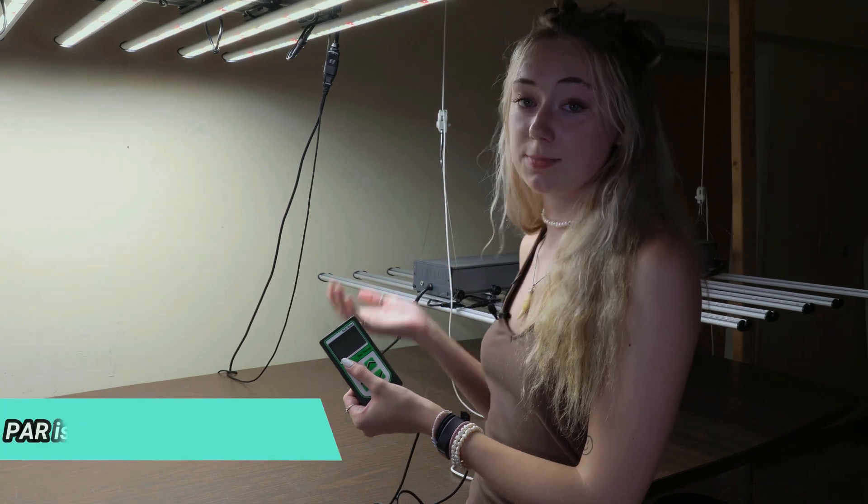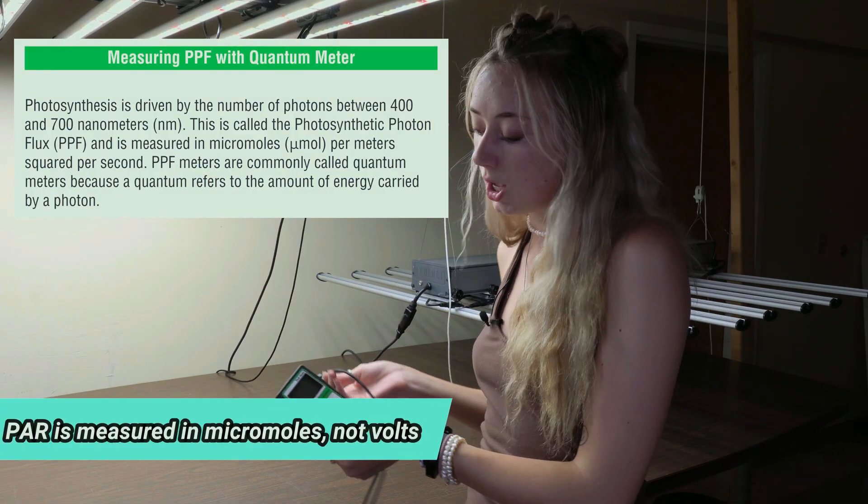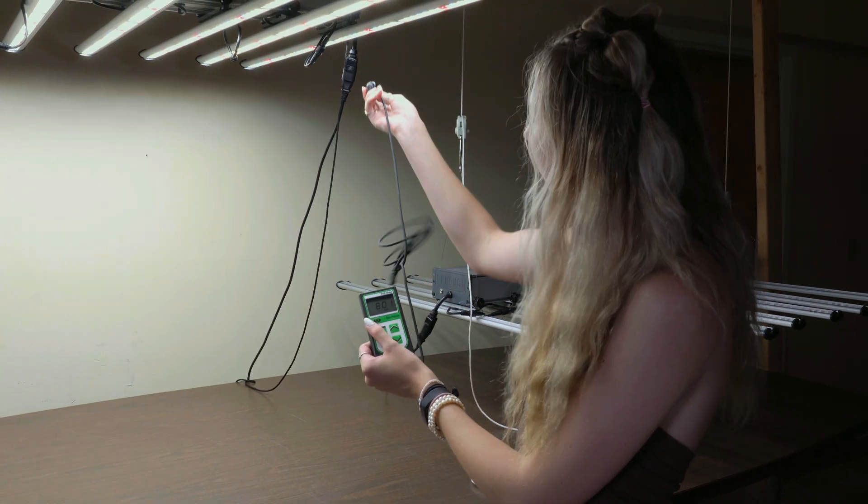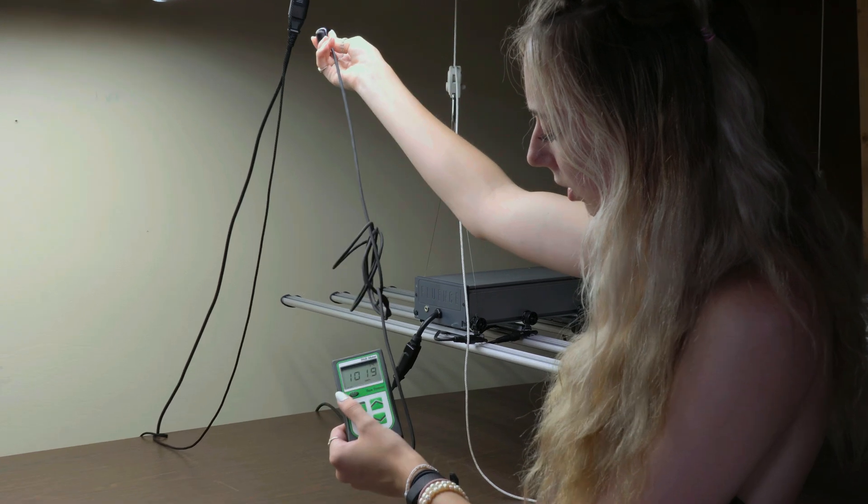And typically with lights like these, you could expect them to be at a thousand volts. So using a PAR meter, you could see accurately how much the light will actually be penetrating each of the plants.